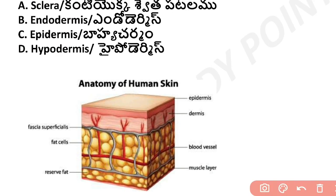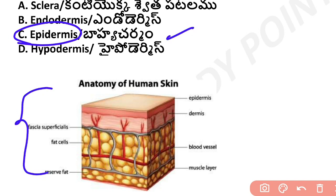The outer layer of the skin is called the epidermis. It is the outermost layer of the skin. Below the epidermis, there are blood vessels, muscle layers, fat cells and other structures.